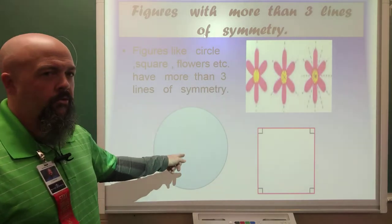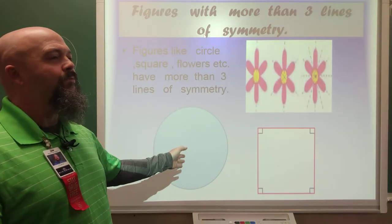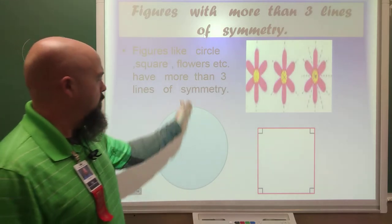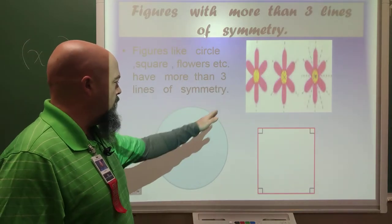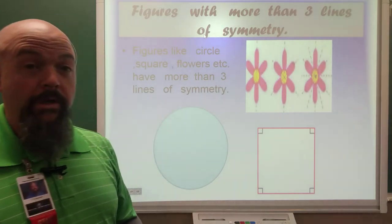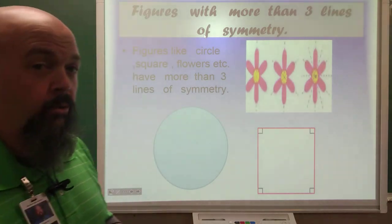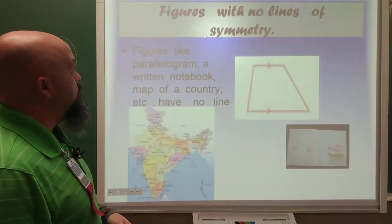Oh, this one. The circle is almost an infinite number of lines of symmetry. Because anywhere, as long as it is straight through the center, is going to give you a line of symmetry. That's the beauty of math.